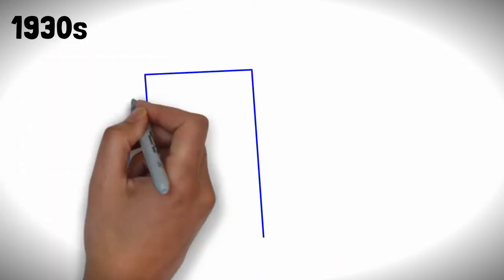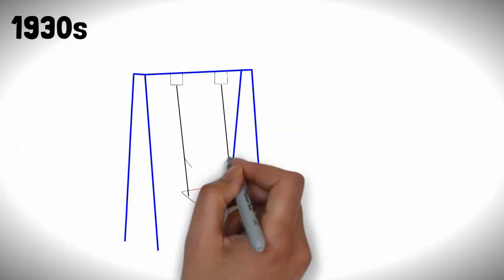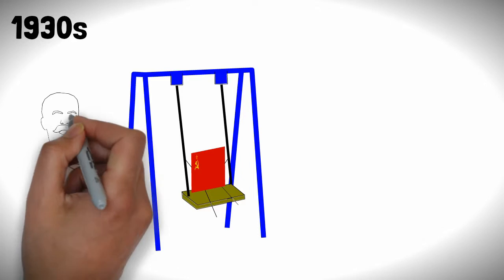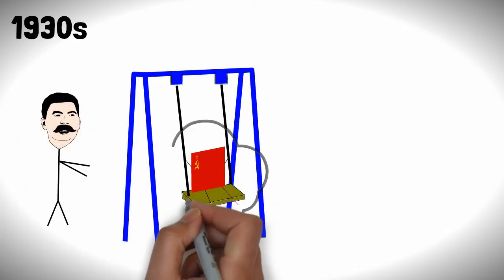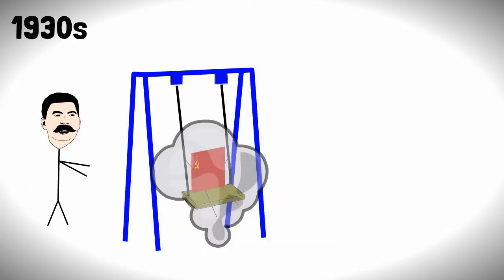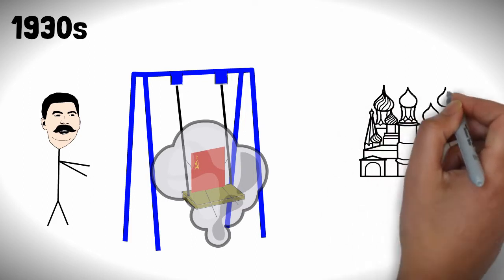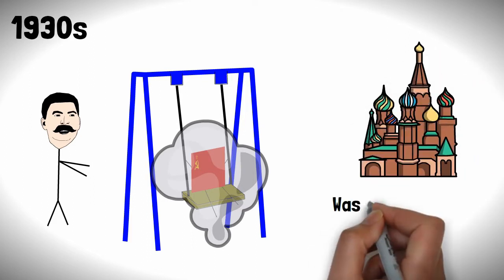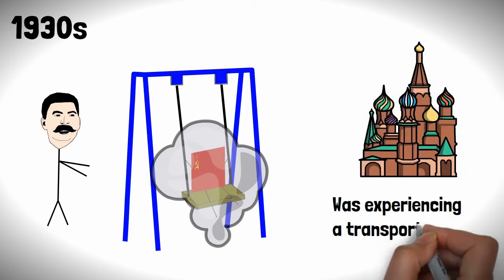It's the early 1930s and in the Soviet Union communism is in full swing with the main man with the mustache at the helm, overseeing the industrialization of the country with one of its important epicenters being the nation's capital, Moscow. Except the city was experiencing a bit of a transport problem.